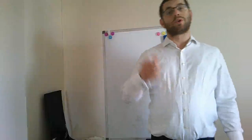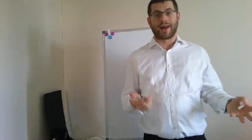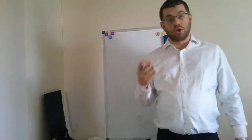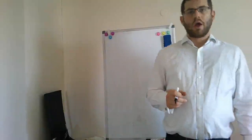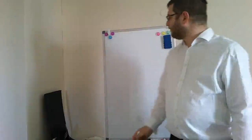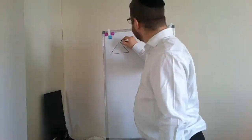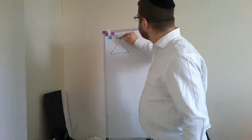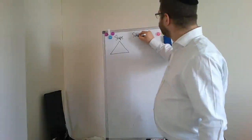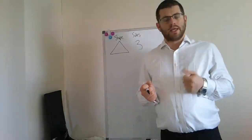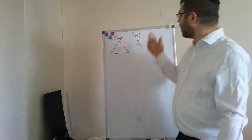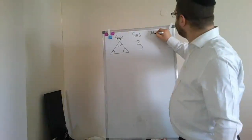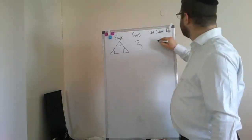Now that we've established interior and exterior angles, let's find a very important formula you'll use for nearly every exam question in this section. I'll start with a polygon of three sides — most commonly known as a triangle. We're going to create a table with the shape and number of sides. For a triangle, the interior angles add up to 180 degrees — so the total interior angles for three sides is 180 degrees.